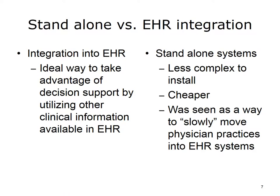There are two main types of e-Prescribing systems: those that are standalone, or those that are integrated into an electronic health record. Those that are standalone are typically less complex to install, typically cost less, and originally they were seen as a way to slowly move physicians into full EHR systems. E-Prescription systems that are a part of the electronic health records systems are really the ideal way to take advantage of the decision support by utilizing other clinical information available in the electronic health record for effective, safe, and high-quality prescribing.